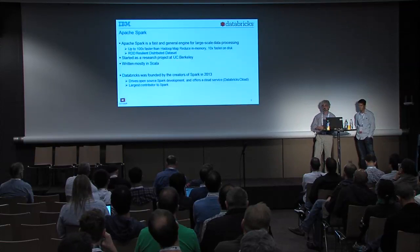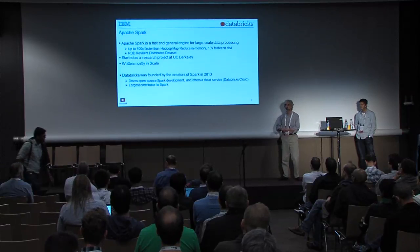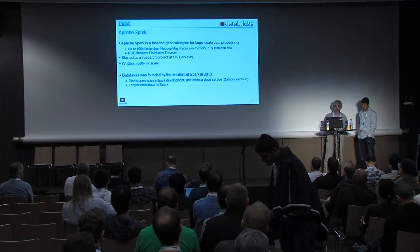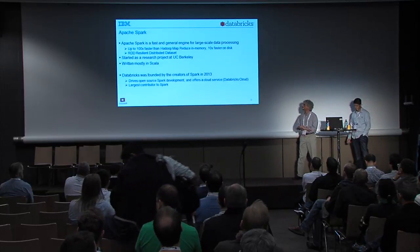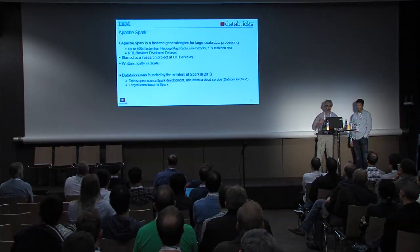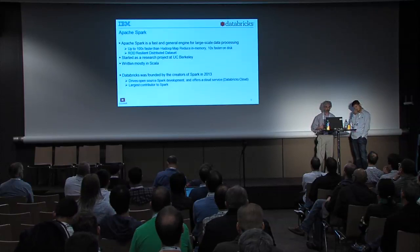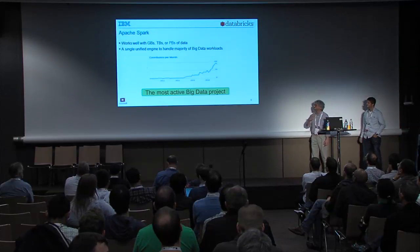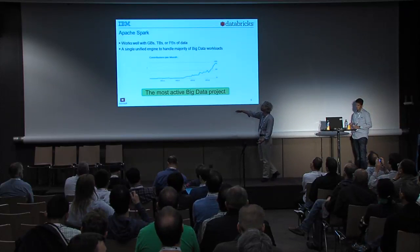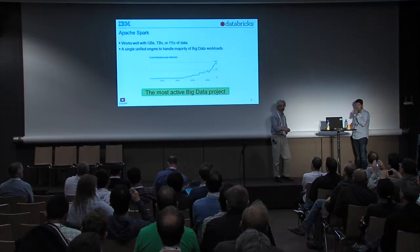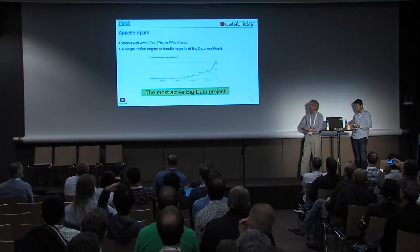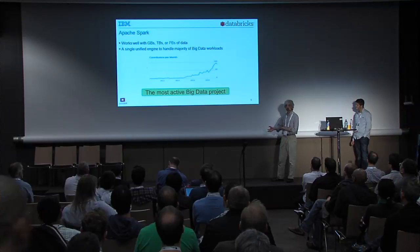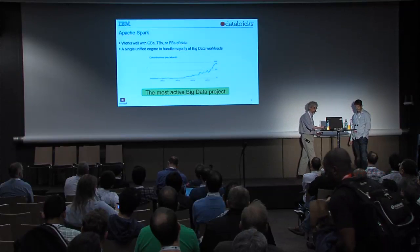Spark is mostly written in a language called Scala. When you see the demos, you'll see some use of Scala, though you don't need to be a Scala expert. One of the key companies involved in Spark is Databricks, founded in 2013 — the largest contributor to Spark. They also have a cloud service called the Databricks Cloud. Spark is the most active big data project, with very quick growth in number of contributors, reminiscent of what we saw for OpenStack in its early days. It scales from gigabytes up to terabytes and petabytes of data.